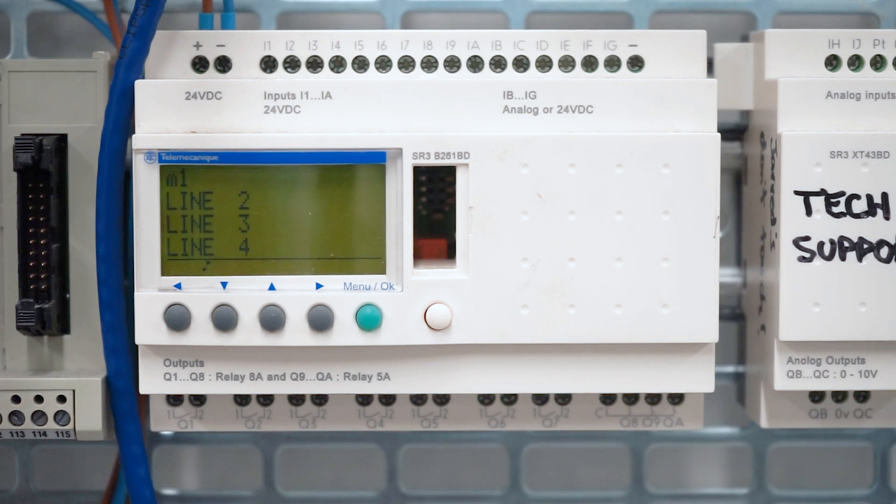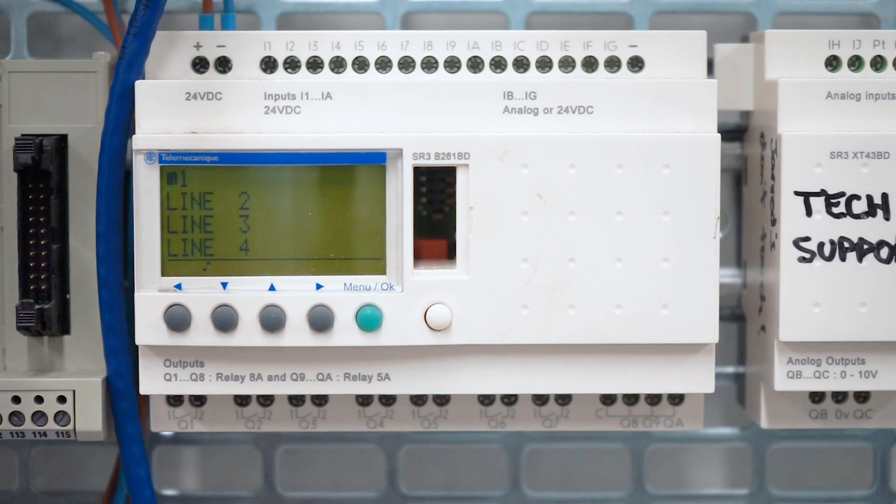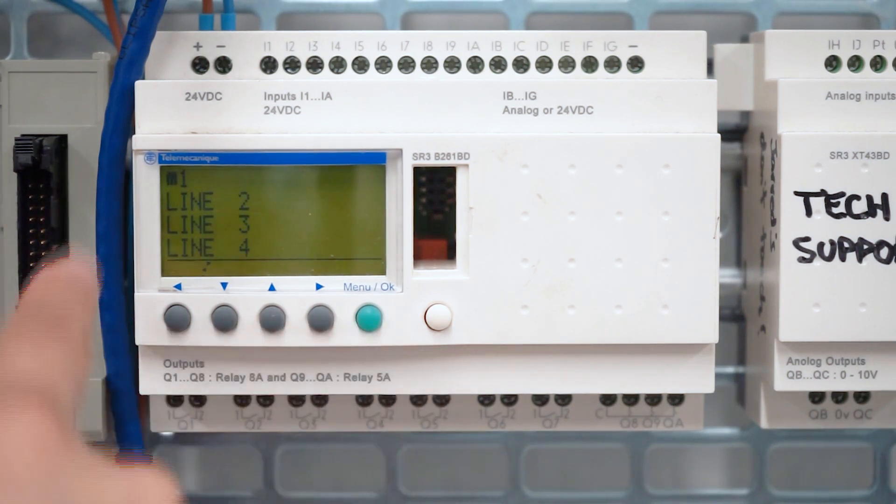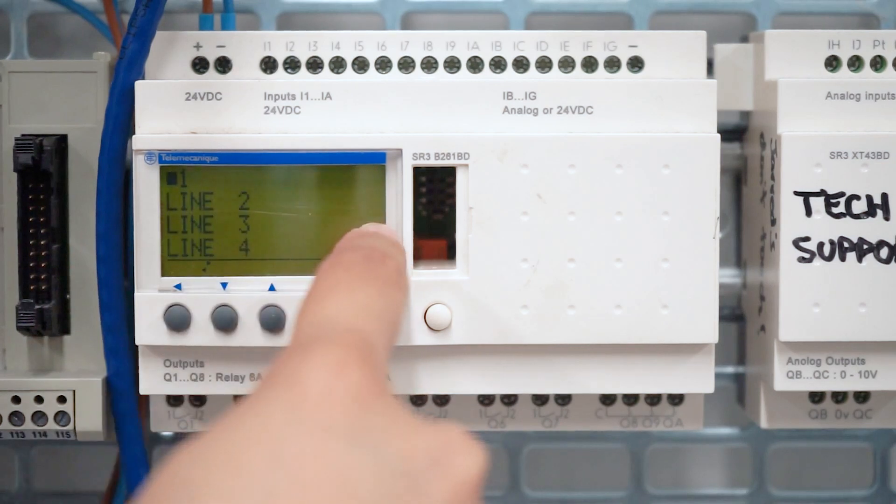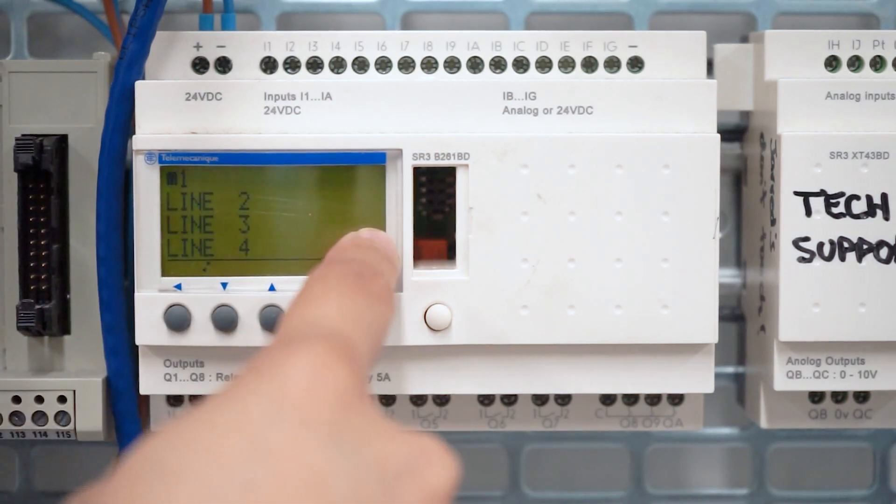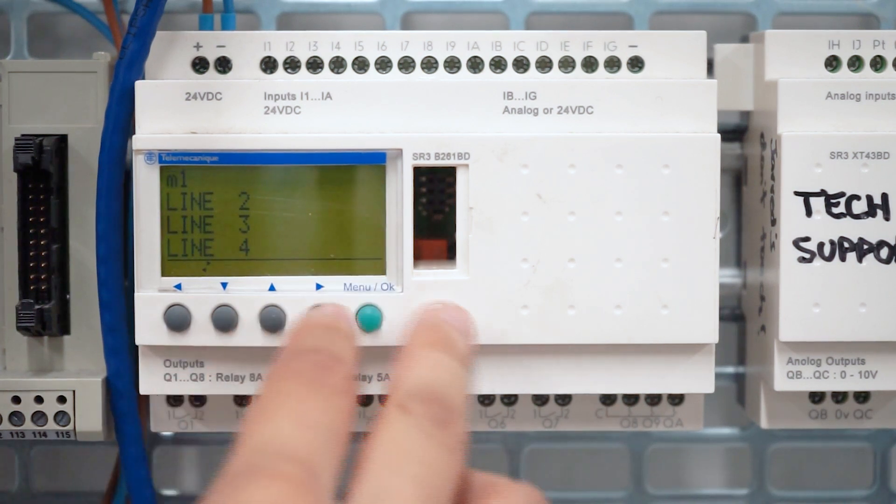You can also place a contact anywhere along this line, anywhere along here, except for the most right-hand side. That is reserved for coils. So what we're going to do is we're going to scroll back up to i and we're going to change this.